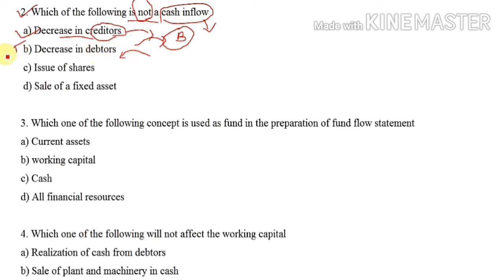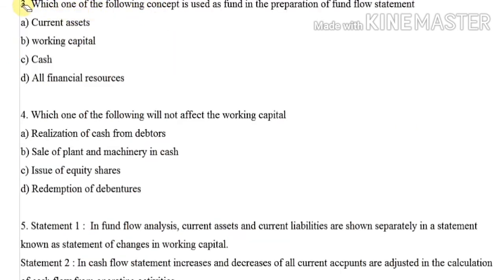Issue of shares is also a cash inflow, because the company receives cash. And decrease in creditors is a cash outflow — so 'decrease in creditors' is the correct answer as the item that is NOT a cash inflow.